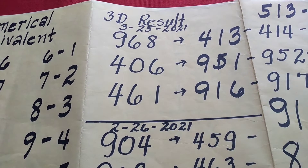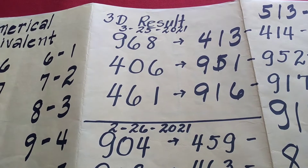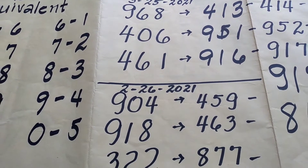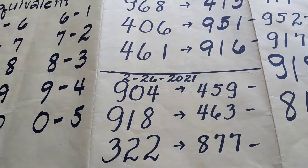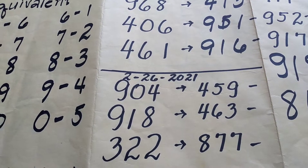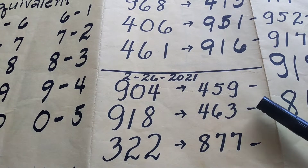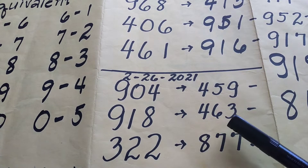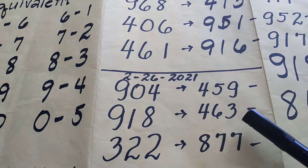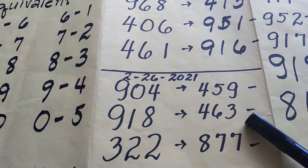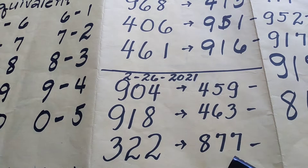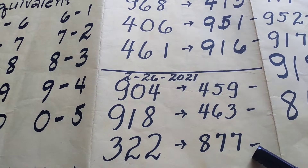So noong February 26, 2021, isang buwan na nakalilipas, ito ang nagsilabas na mga kombinasyon: 9, 0, 4, 4, 5, 9. Ang 9, 1, 8 ay naging 4, 6, 3. So ang 3, 2, 2 ay naging 8, 7, 7.